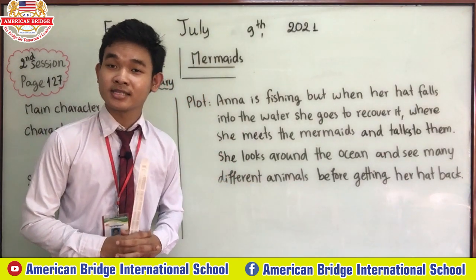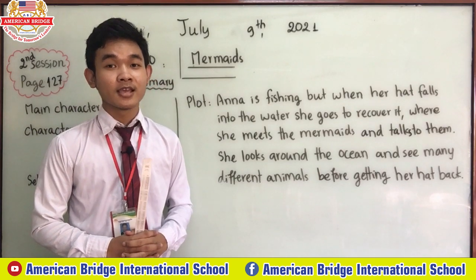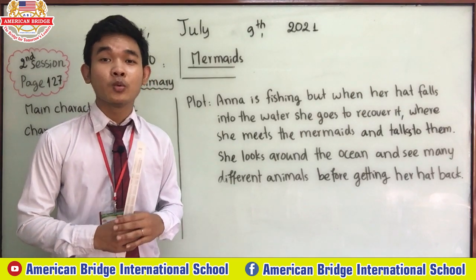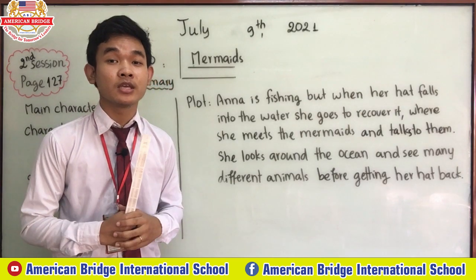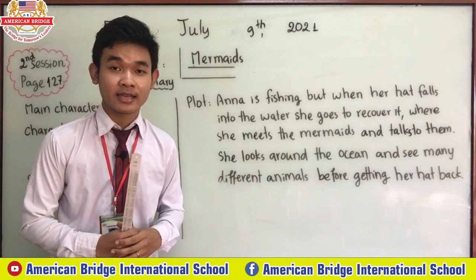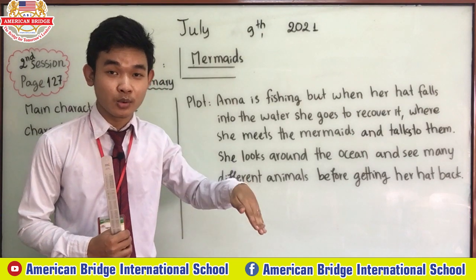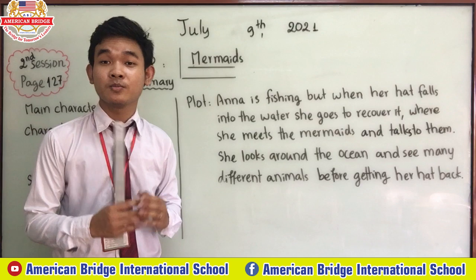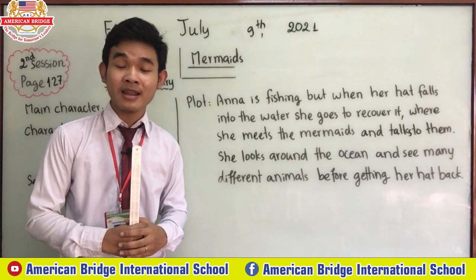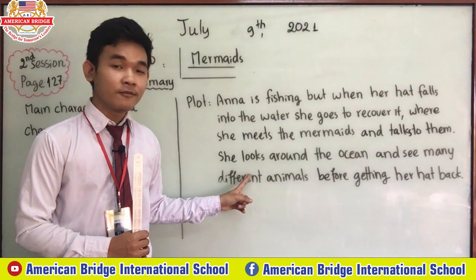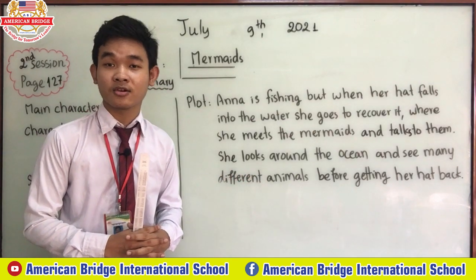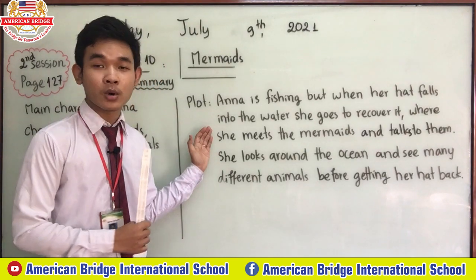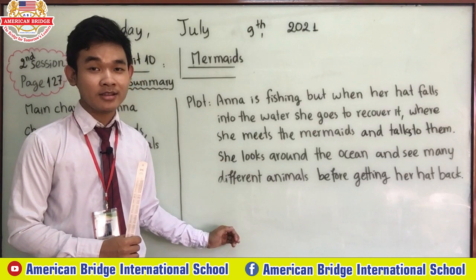So what was Anna doing? She was fishing, and then her hat dropped into the water, so she dived in to get it back. She met the mermaids and had to be nice to them in order to get her hat back. She found her hat with the help of the crab and got it back. That's our story summary.